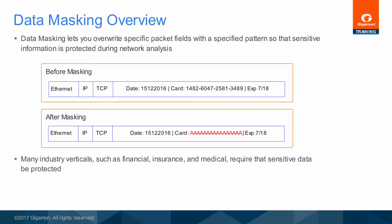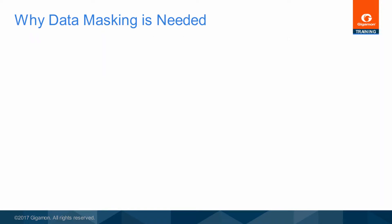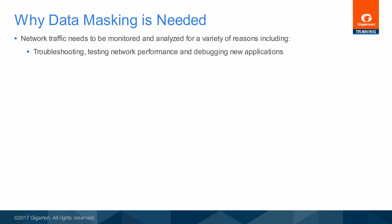Confidentiality and compliance is crucial for a broad range of organizations, both government and private. Regulations in industries such as finance, insurance, and healthcare require that sensitive data be protected. Network traffic needs to be monitored and analyzed. The network manager must conduct effective troubleshooting and take actions quickly to solve possible problems, as well as to ensure network performance or debug new applications. Monitoring network traffic and conducting forensic analysis helps ensure that enterprise policies can be followed and violations can be recorded and stopped quickly.